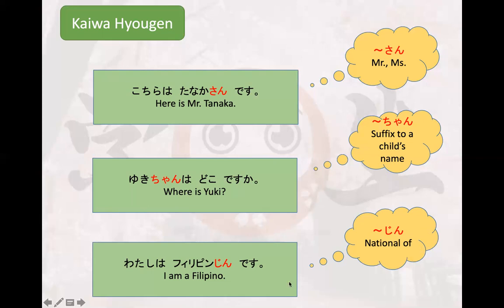'Jin' is a nationality suffix — we attach 'jin' to the name of a country. For example, 'I am a Filipino' becomes 'Watashi wa Firipin-jin desu,' where 'Firipin' is from the Philippines. These are useful kaiwa yogen when you go to Japan and can use them in conversation.